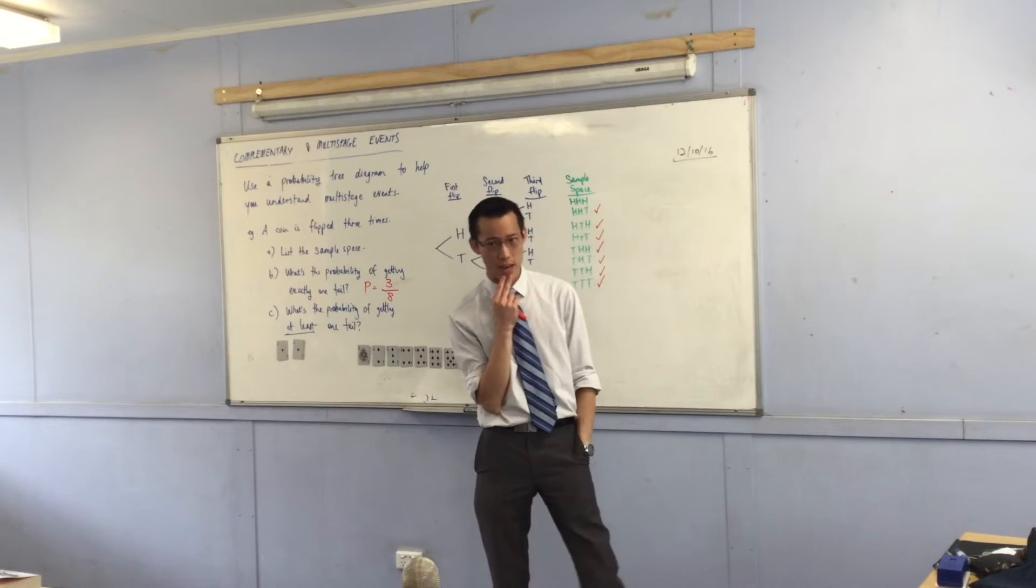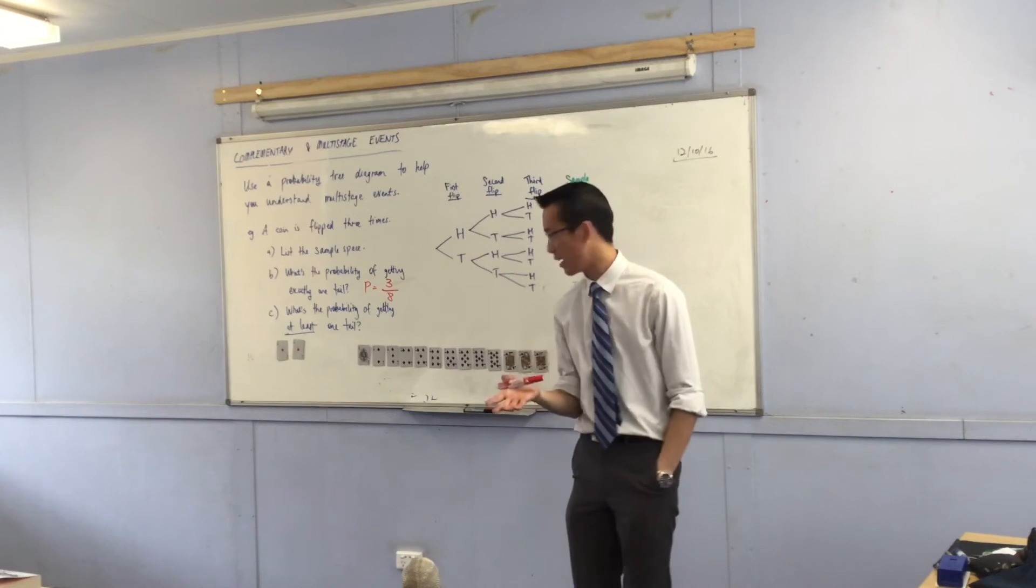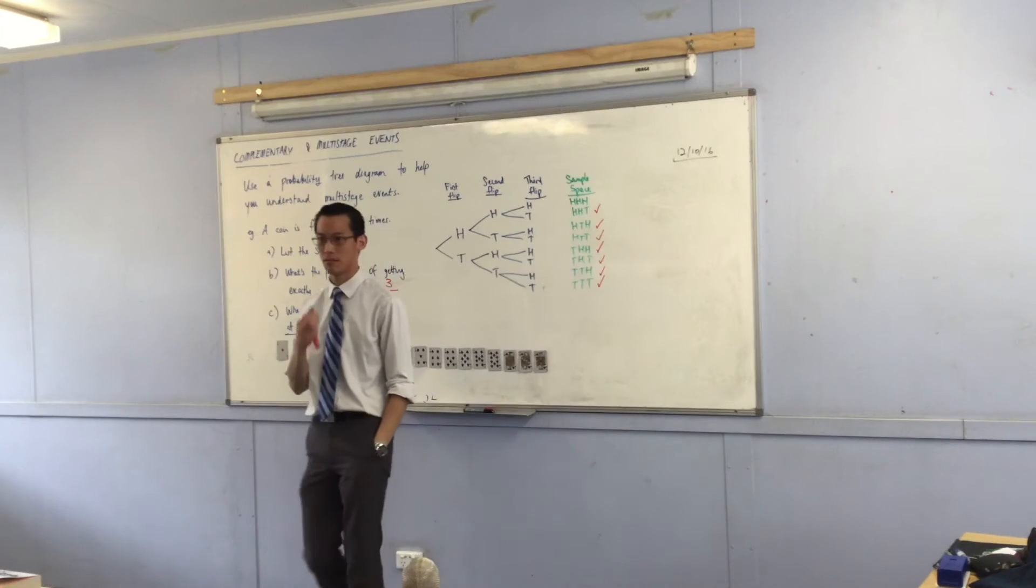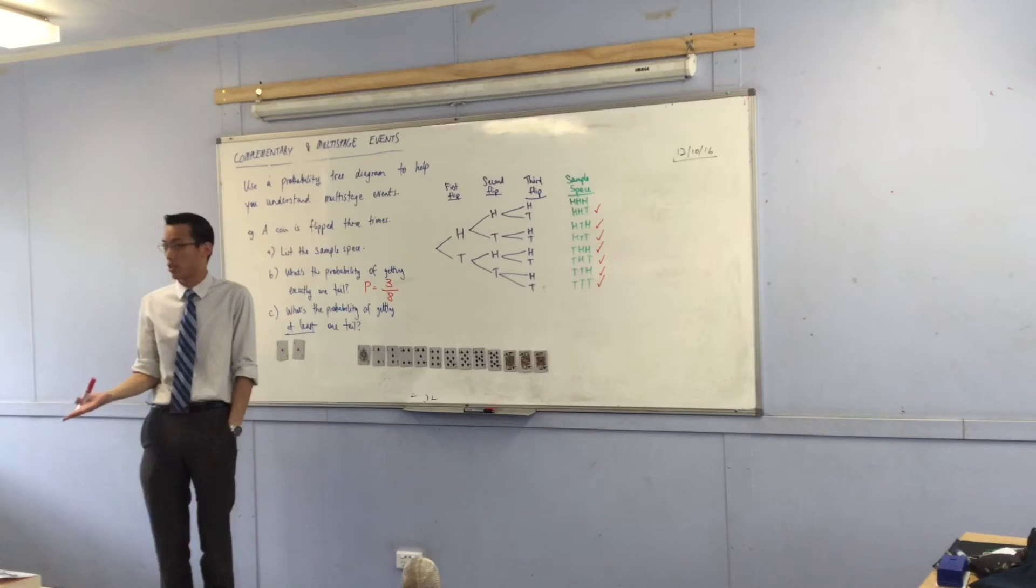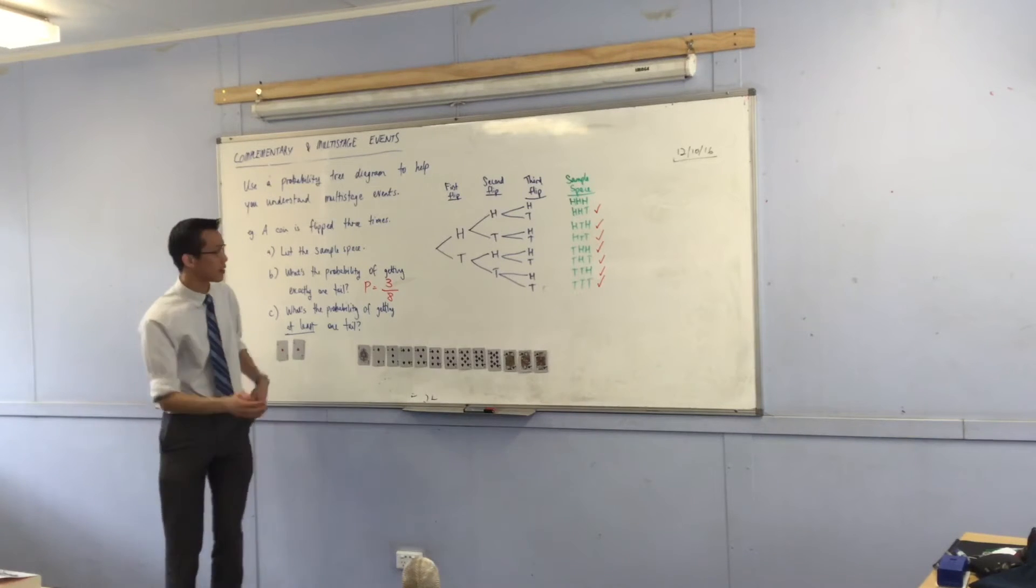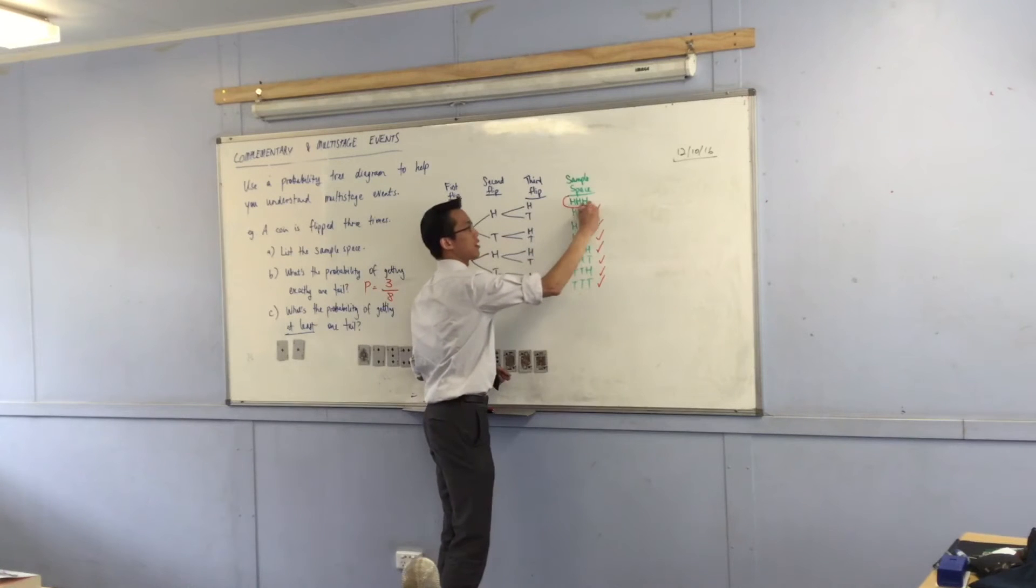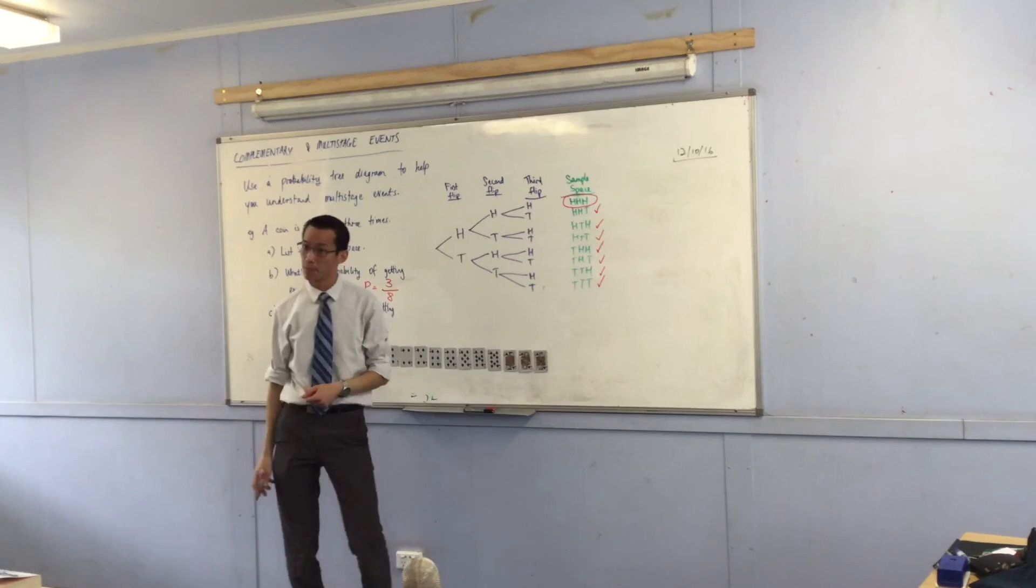The probability of getting at least one tail. What's the complement of that? What's the only way to not get at least one tail? It's to get no tails. Or, you could say it alternatively as to get all heads. And you can see it in the list that I've got here. Do you see it? Look, this guy here is the complement. Okay?